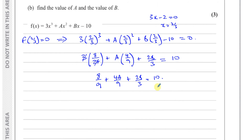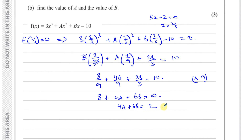Multiplying everything by 9 to clear the fractions: 8 plus 4a plus 6b equals 90. So 4a plus 6b equals 82. Dividing through by 2 gives a third equation: 2a plus 3b equals 41.